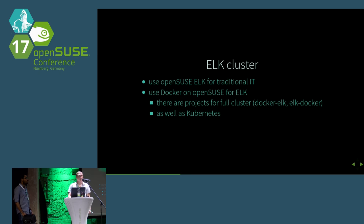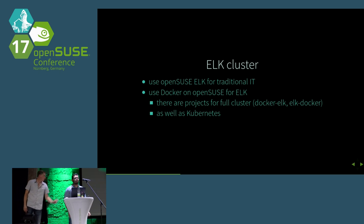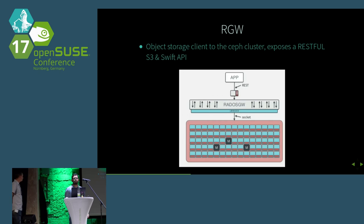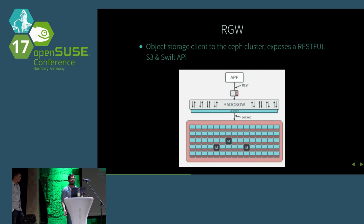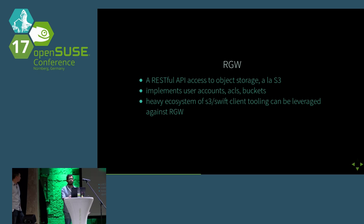Another interesting application for ELK that we discovered recently is metadata. For that, I invite Abhishek. The Rados Gateway is an object storage daemon that provides an HTTP REST API access to the Ceph cluster. Essentially it's a proxy that translates HTTP requests into librados requests, which is what the Ceph cluster actually speaks. It's highly scalable and horizontally scalable because we don't maintain any state in the Rados Gateway — everything is maintained in the Ceph cluster.